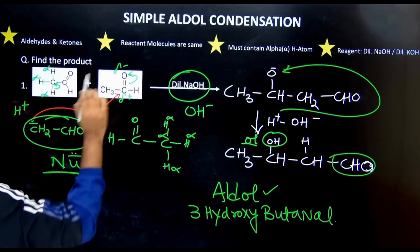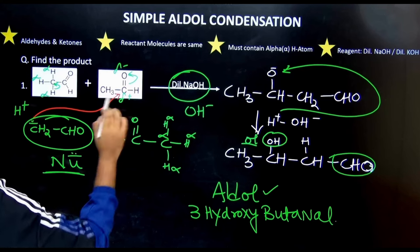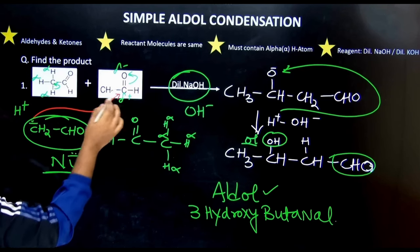How it will happen? The pi electron will be taken up by the oxygen. So the carbon will have a partial positive charge. Due to this, nucleophile will attack here.